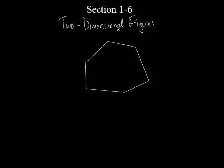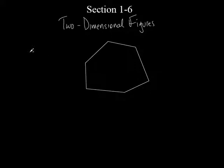It doesn't have to be exactly like that, but just anything with a bunch of sides all connected. So it doesn't have to look exactly like that, it doesn't have to be exactly that many sides. But we call this thing a polygon.